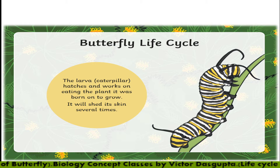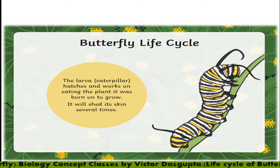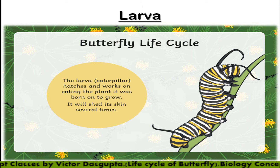When the larva or caterpillar emerges from the egg, it will shed its skin — this is called molting. After each and every molting, they will be termed as instar larvae: instar 1, instar 2, and so on. They eat the plant leaves and plant parts vigorously and shed their skin several times.